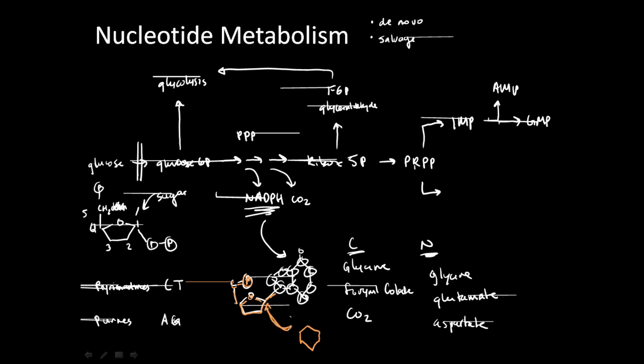This ring is called orotic acid, and eventually this combined with the ribose ring forms orotidine 5-monophosphate, OMP, which is also generated into UMP, which is uracil monophosphate, which can be eventually converted to UTP, which is the addition of two phosphates.